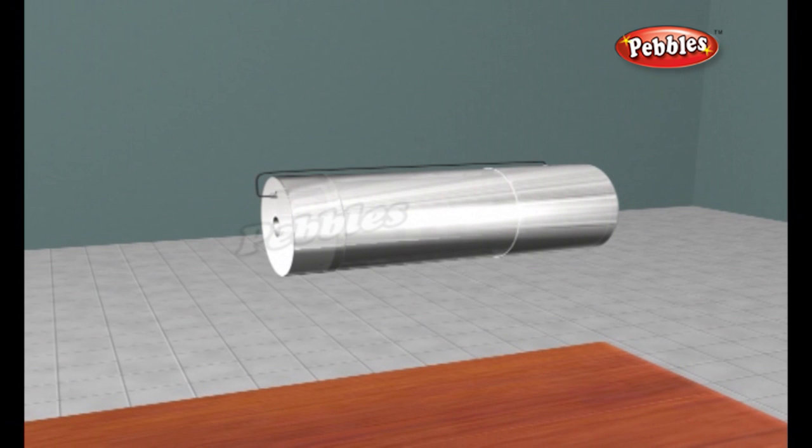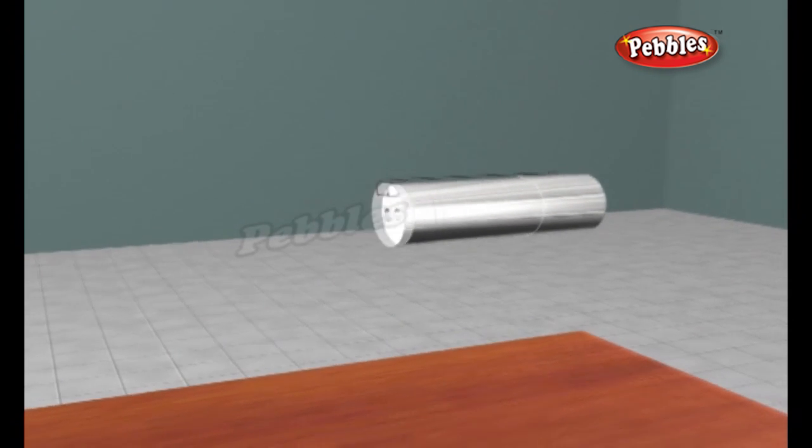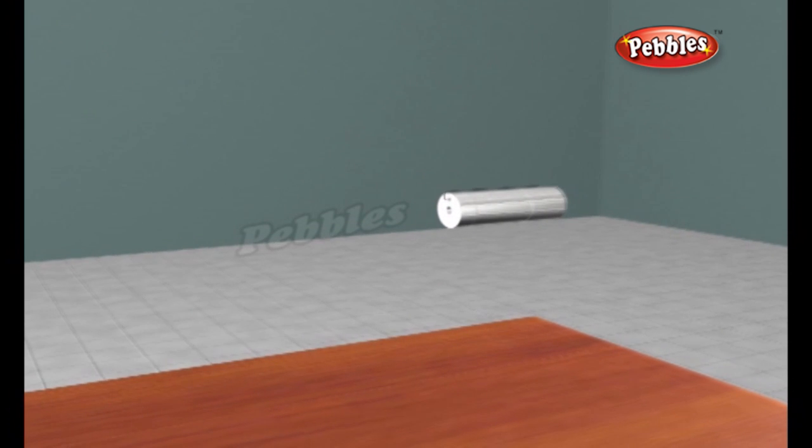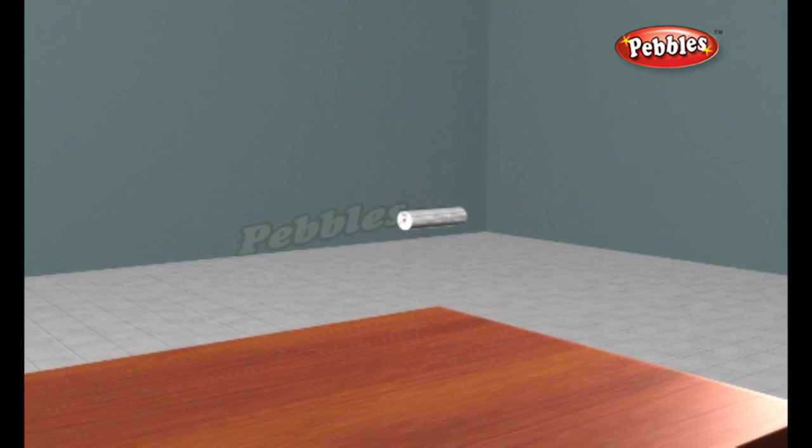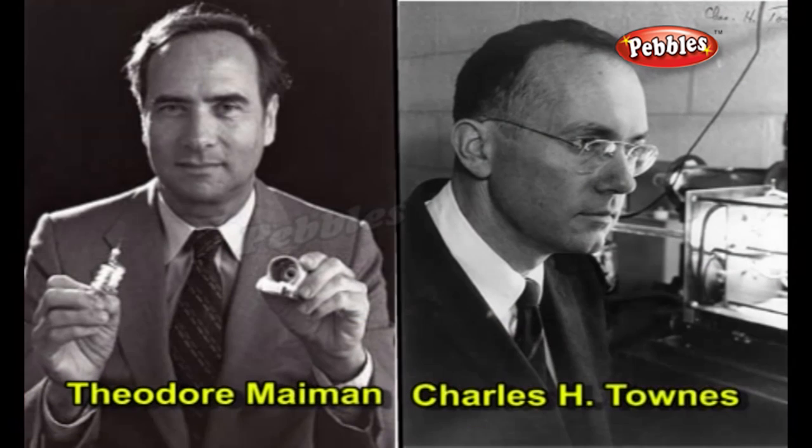A laser is effectively a machine that makes billions of atoms pump out trillions of photons all at once so they line up to form a really concentrated light beam. The first laser was constructed in 1960 by Theodore Maiman, based on earlier work by Charles H. Townes.